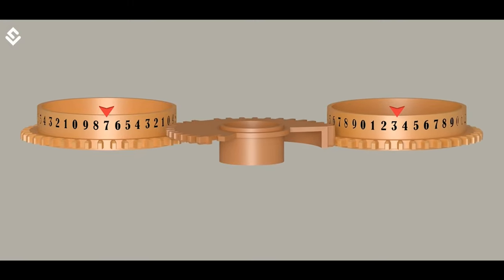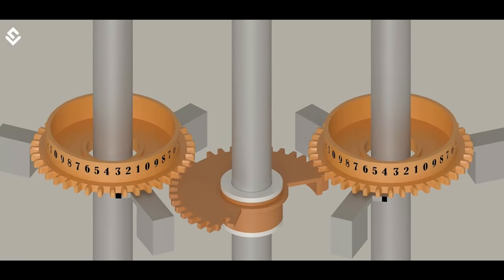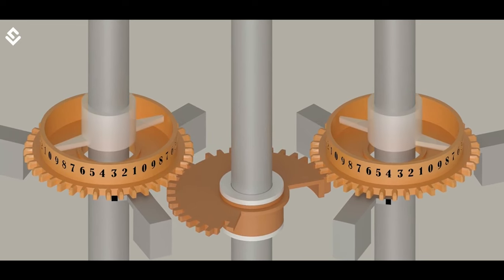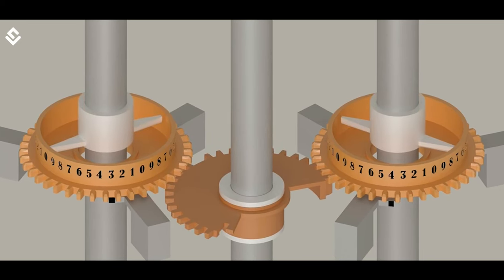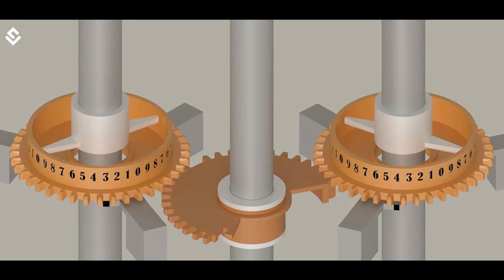Thus, with the help of a gear system, rotating shaft, and sweep arms, calculations were performed by taking the values stored on each column. These machines were as big as a large table.